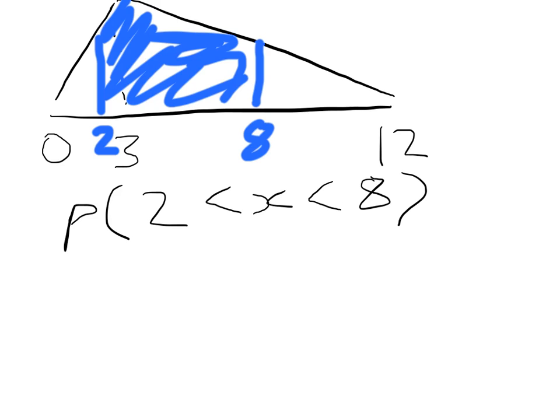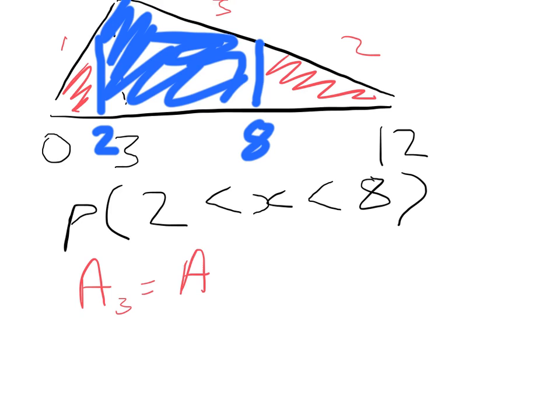To do this, we break the region into two parts. We could work it out as two trapeziums or two triangles — we'll use two triangles. We'll call the left triangle Area 1 and the right triangle Area 2. Then Area 3 (what we want) equals 1 minus Area 1 minus Area 2.